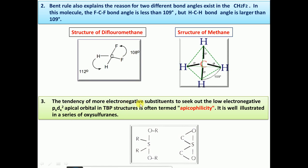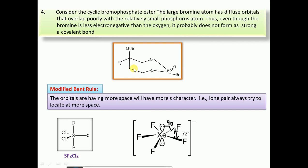The third application is the tendency of more electronegative substituents to seek out the low s-character apical (axial) position — this is termed apicophilicity. More electronegative atoms always prefer to occupy the axial position, which has less s-character. This is illustrated by oxysulfuranes: oxygen, being more electronegative, always tries to occupy the axial position.